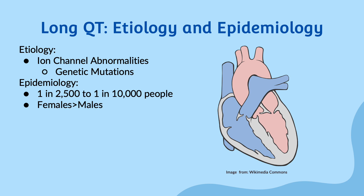Long QT syndrome affects approximately 1 in 2500 to 1 in 10,000 individuals. It is more common in females than males and typically presents with cardiac events anywhere from childhood to early adulthood. It's classified into many subtypes based on the specific ion channel gene mutation, with the most common subtype being LQT1.